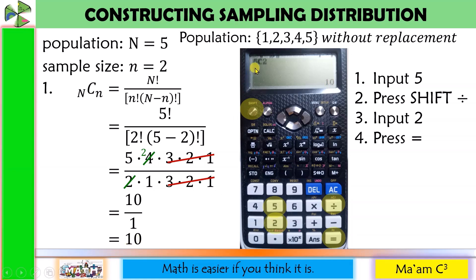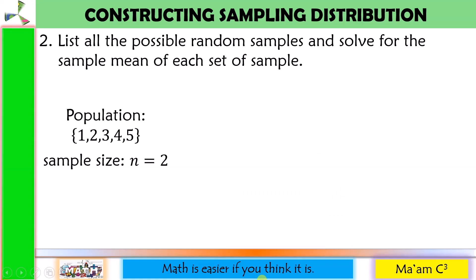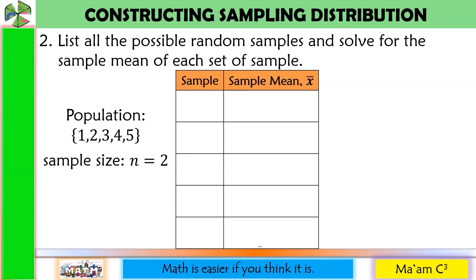Step 2: list all the possible random samples and solve for the sample mean of each set of sample. We need a table with two columns — sample and sample mean (X-bar). Since our sample size is 2, we take samples 2 at a time. Starting with 1: we have 1,2; 1,3; 1,4; and 1,5. We are done with 1.